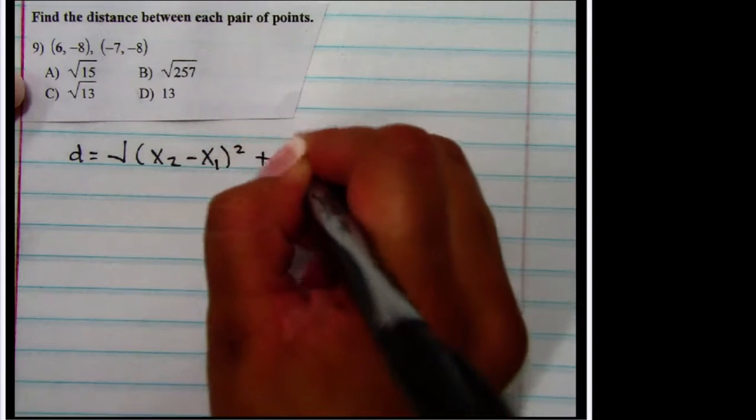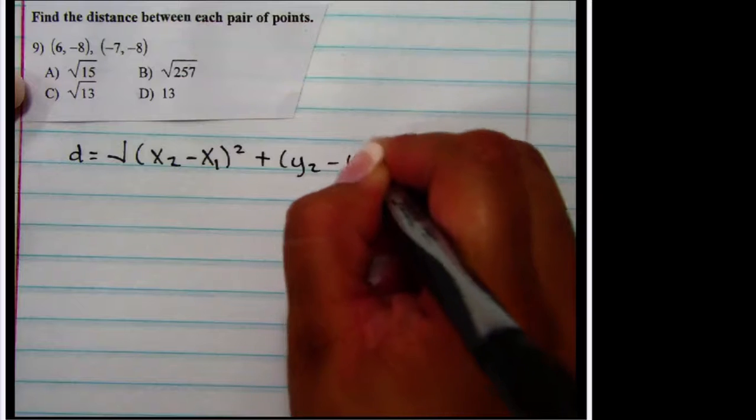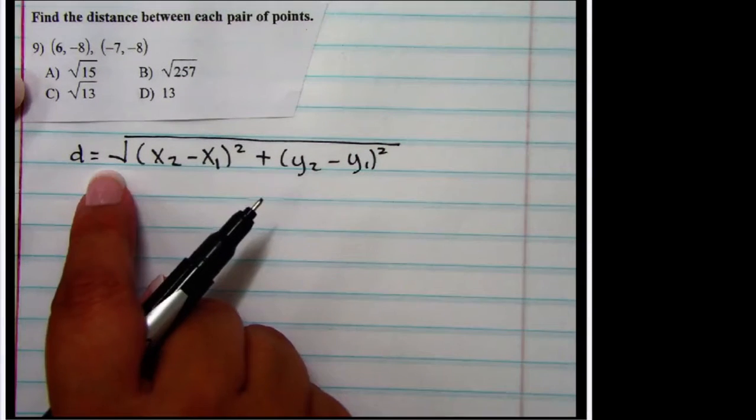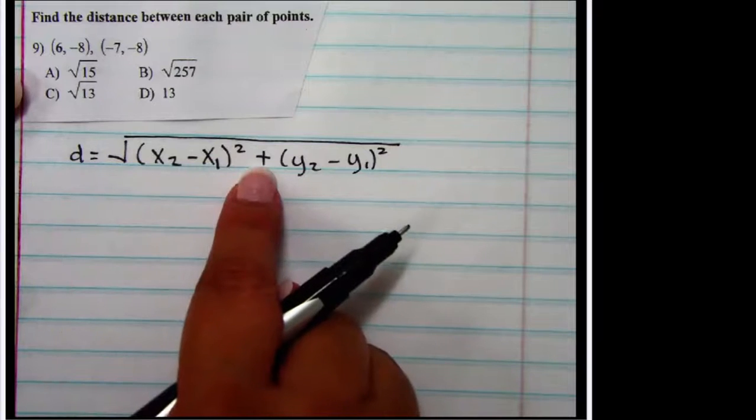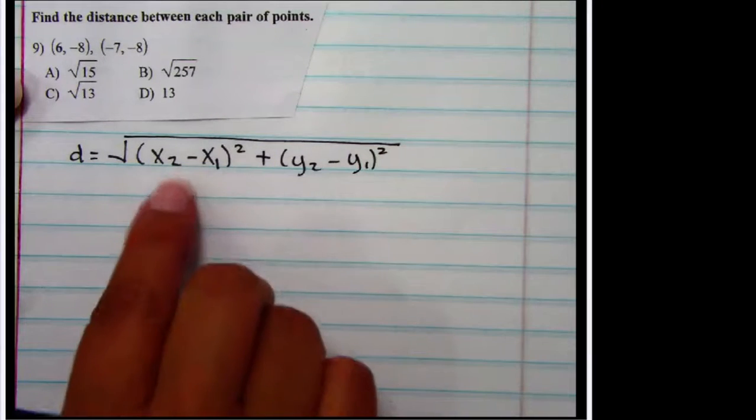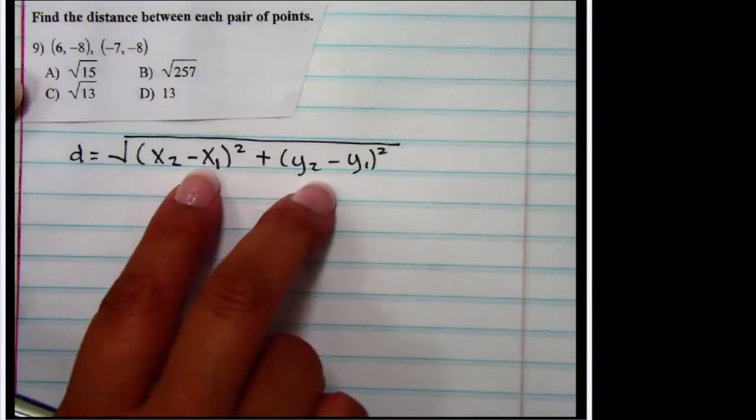The distance formula looks like this. It is the square root of the sum of the squared differences between the x values and the y values.